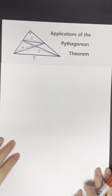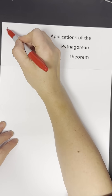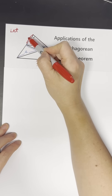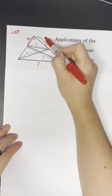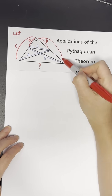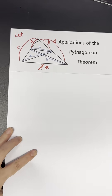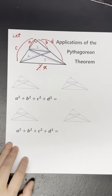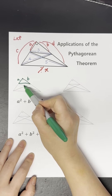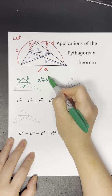This is Applications of the Pythagorean Theorem. First, let the sides of the large triangle be broken down like this. We'll be finding x. Now we'll be breaking down the triangle into four smaller triangles to find x.